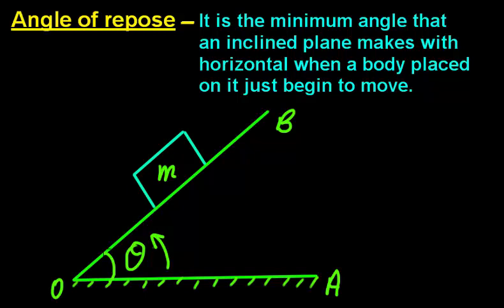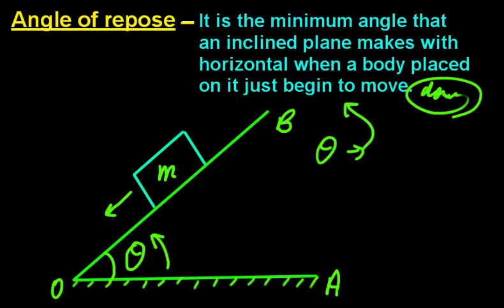then slowly, as the angle increases, there will be a point where the object will start to move downward. The value of that angle at which the object just begins to move down on the inclined plane — that is the angle of repose. Repeating: the value of angle at which the object just starts to slip downward when placed on the inclined plane.